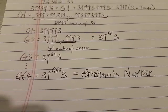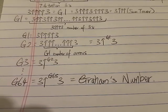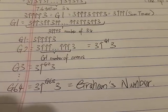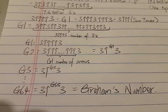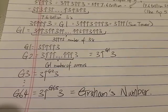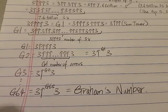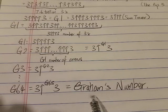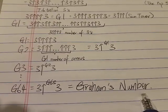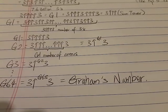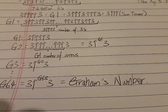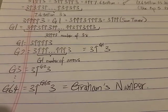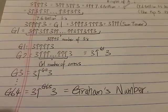Graham's number was once the biggest number ever used in a serious mathematical proof. Right now it's no longer the biggest number used in math — there are bigger numbers. But there you go: Graham's number is very, very big. In the next video, we're going to talk about three more big numbers, so stay tuned. Thanks for watching, have a nice day.